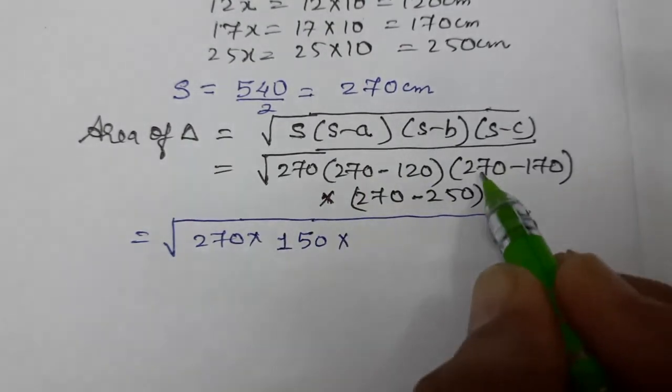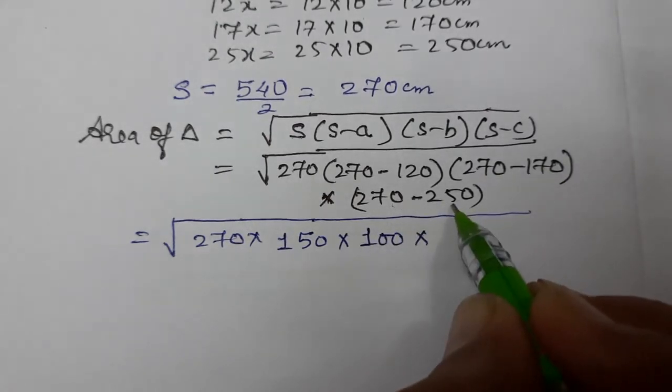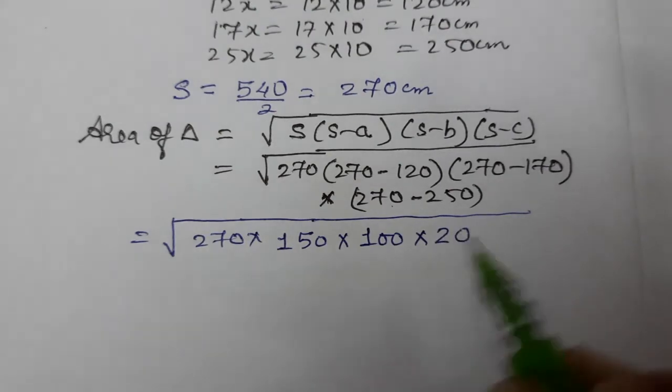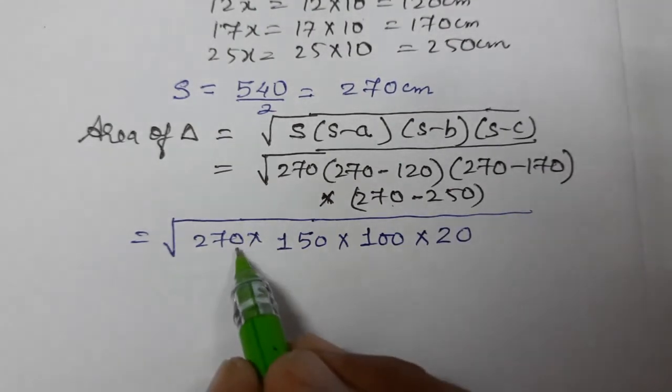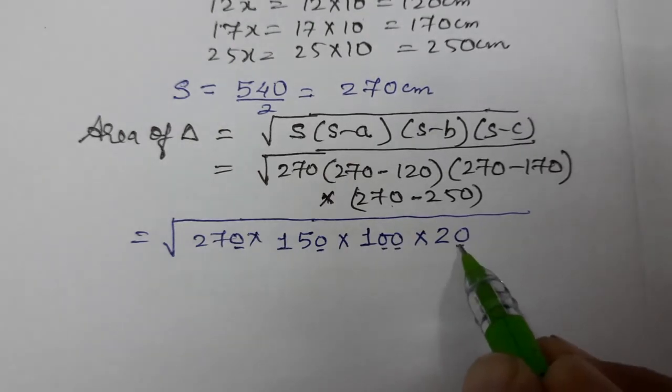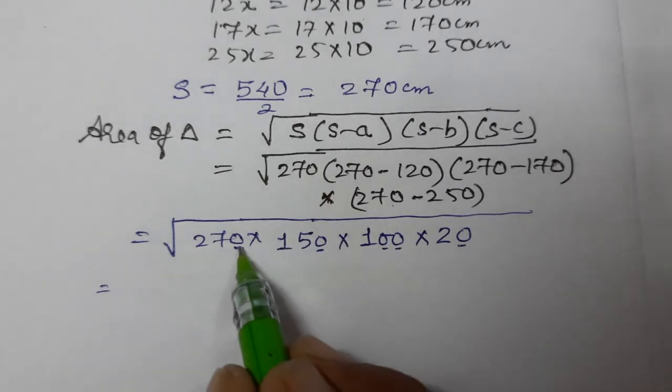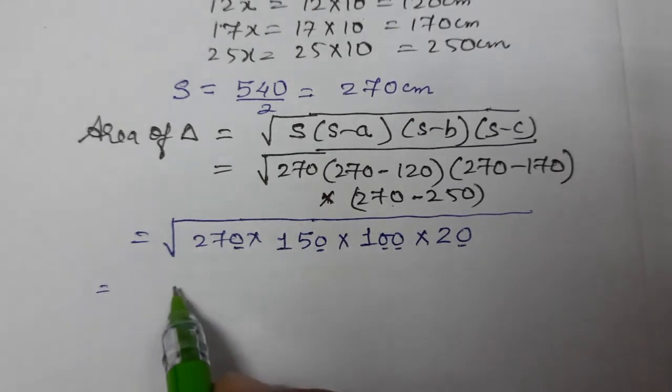270 minus 170 equals 100. 270 minus 250 means 20. Now count how many zeros are there: 1, 2, 3, 4, 5. So 5 zeros.